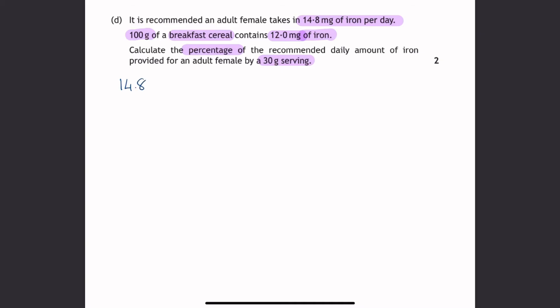So the first one we were given is that 14.8 milligrams per day is what the female needs - that's their recommended daily allowance, RDA. And then it says 100 grams of cereal contains 12 milligrams of iron. So I'll write cereal and iron just so I know what the numbers are. It wants us to calculate the percentage of the recommended daily allowance. So I'll put percentage question mark. Provided by a 30 gram serving. So 30 grams is a mass of cereal. So in order to work out the percentage of the recommended daily allowance, we're going to need to know how much iron is in that cereal.